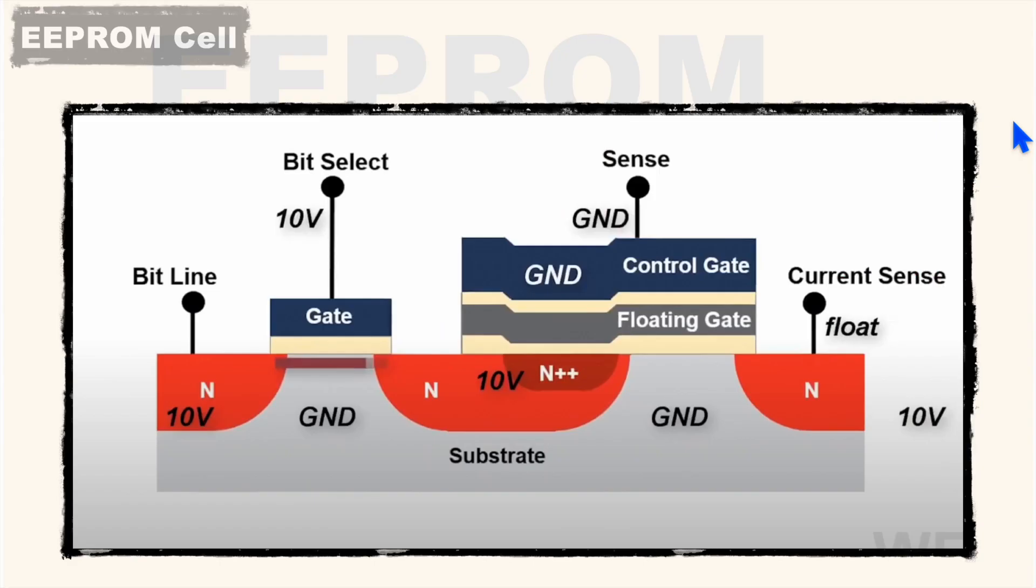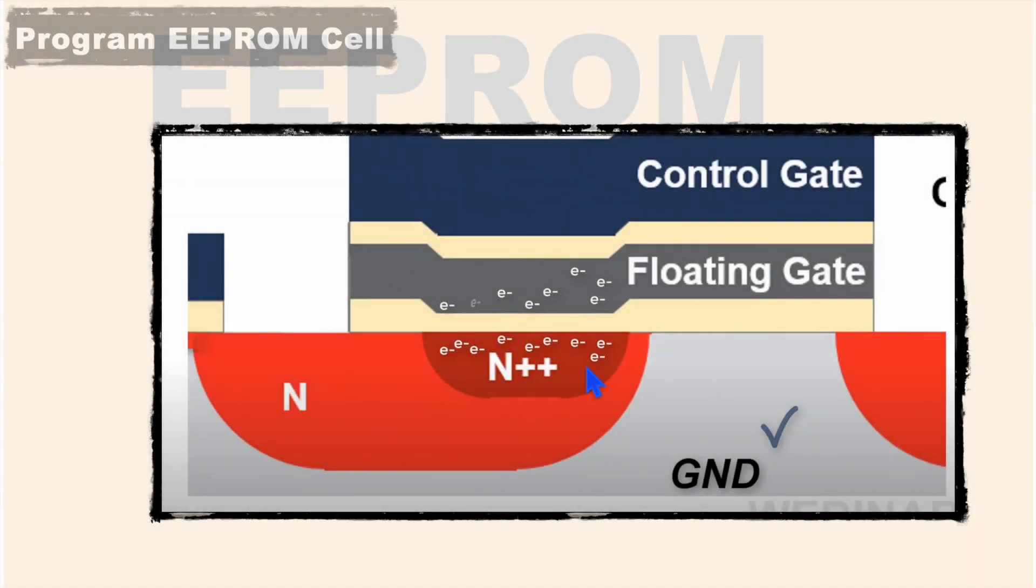And if you see the cell level diagram, it will look like this. Here you can see it has two gates. One is for bit select and on this control gate, you will see a floating gate which plays a very important role. So what happens during programming when you set this gate voltage at let's say 10V and your substrate is ground, the electrons start moving from this N++ channel to this floating gate.